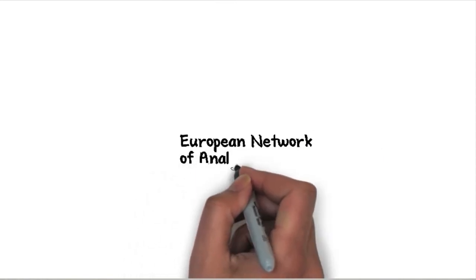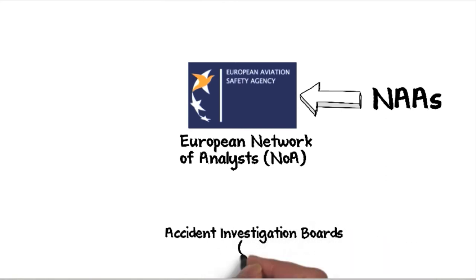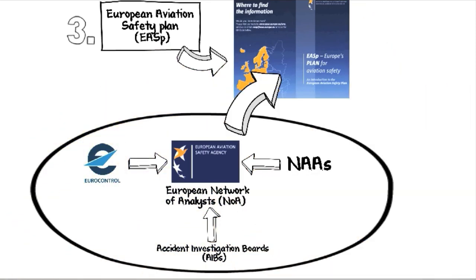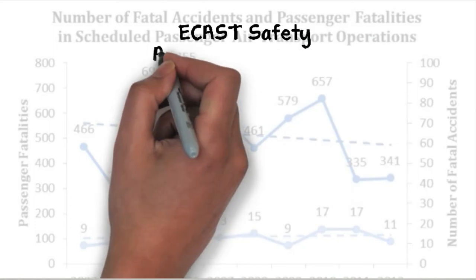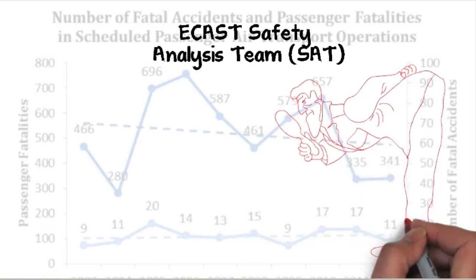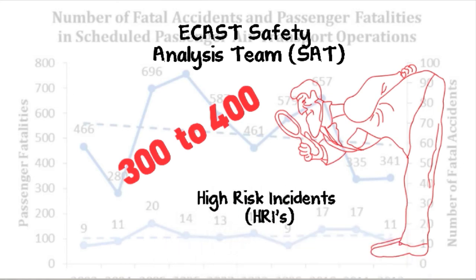Another important action that ECAST initiated was the European Network of Analysts. The network is led by the Agency with participation from National Aviation Authorities, Accident Investigation Boards, and Eurocontrol, and was established to enable the European Safety Analysis Community to work together on taxonomy and data analysis aspects and to support the European Aviation Safety Plan. In addition, ECAST's safety analysis team was set up, composed of a small group of aviation experts which aims to analyze 300 to 400 high-risk incidents annually in order to identify risks and share the lessons learned.